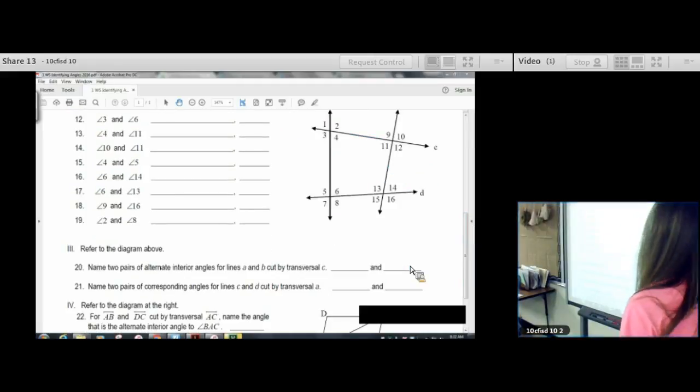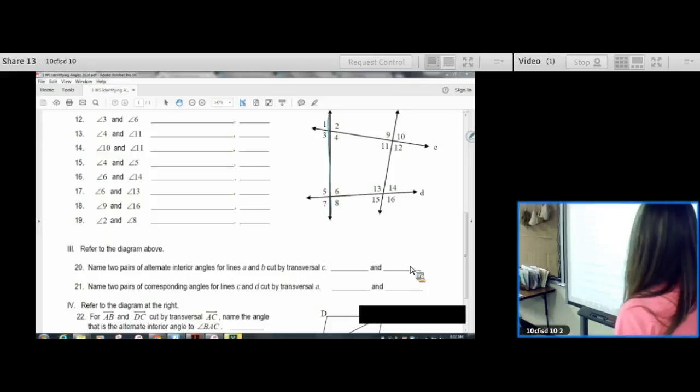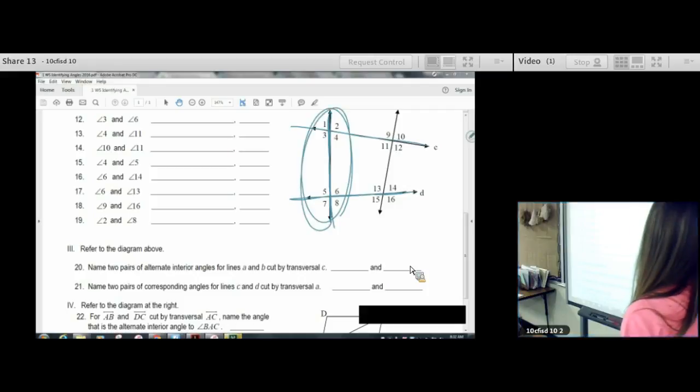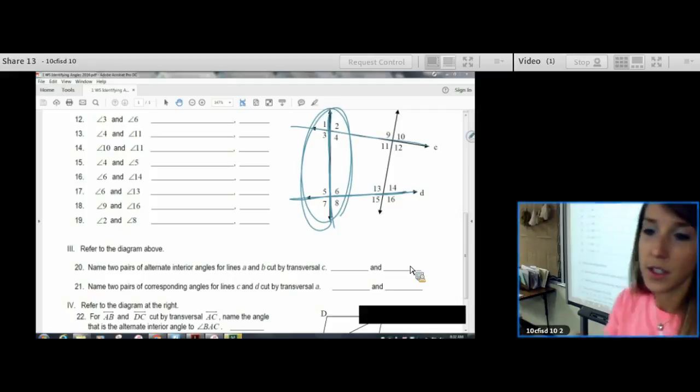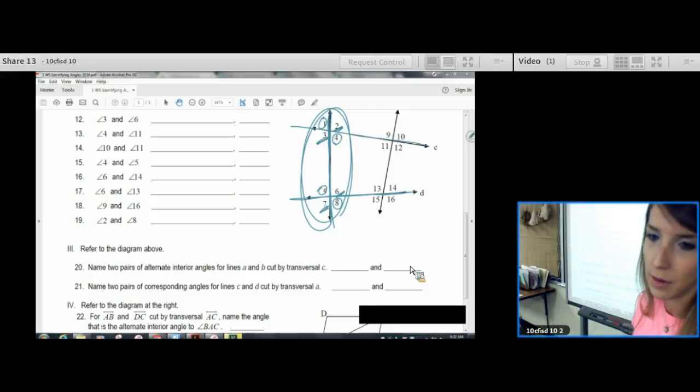The next one, C and D, cut by transversal A. So, now we've got transversal A, lines C and D. We're not using B at all. We're looking at this cluster of angles. And that cluster is corresponding. So, there's four answers to this one, but it says to only name two. You could have been one and five, four and eight, three and seven, or two and six.